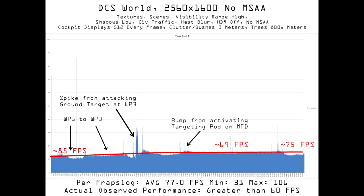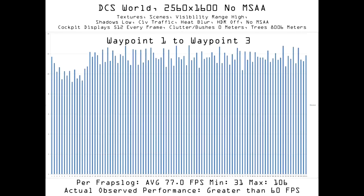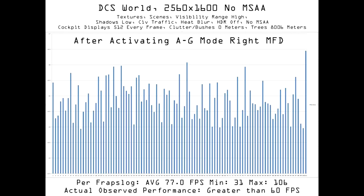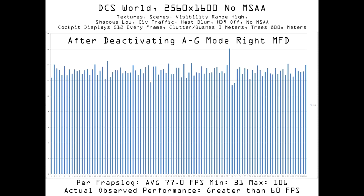Even during that very busy attack on waypoint 3, performance never dropped below 30 FPS, though when flying through the red smoke at the lowest point of my dive, one frame took nearly a tenth of a second to render — I think that has to do with how DCS renders particles. Before activating air-to-ground mode, my system was able to push 85 FPS. After demolishing waypoint 3 and orienting to the bridge at waypoint 4, I activated air-to-ground mode on my right MFD, and at that point I was getting about 68 FPS. Though there's a lot of frame variance, it's irrelevant, as it's all happening below the 16.6 millisecond threshold — my 60 Hz monitor literally cannot show it. After bombing the bridge at waypoint 4, I set the right MFD to standby and performance returned to about 75 FPS.